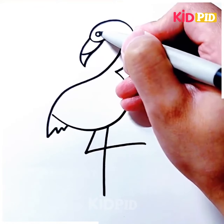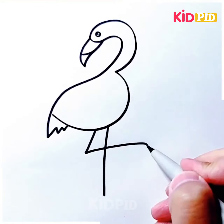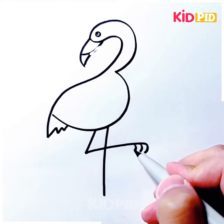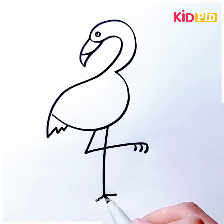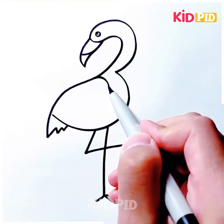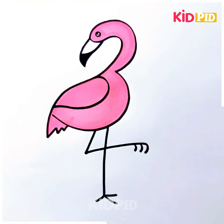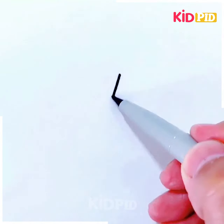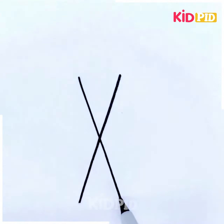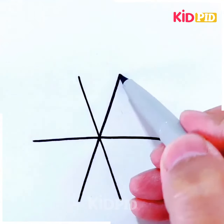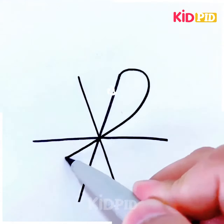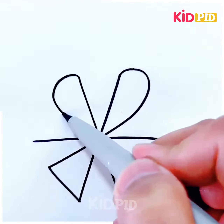A nice number four is nothing but a bird with legs — detail the wings, color it pink, and also color the beak. Add a black cross with two lines and add one more line in the middle.